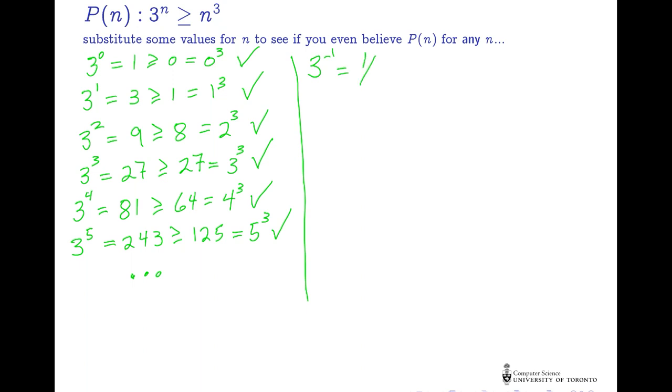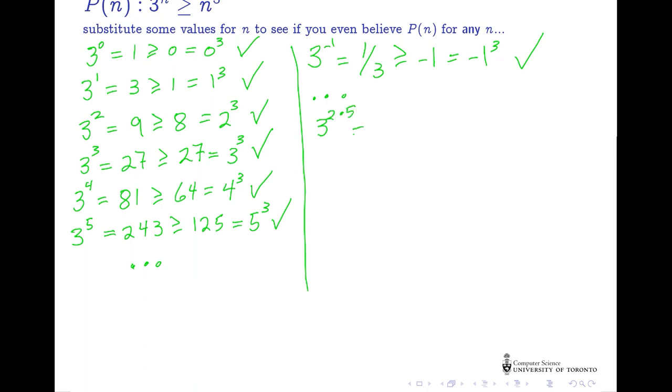3 to the negative 1 is 1/3 greater than or equal to negative 1, which is negative 1 cubed. 3 to the 2.5 is approximately 15.588, which is less than 15.625, which is 2.5 cubed. All the claims work except this last one, which is false.